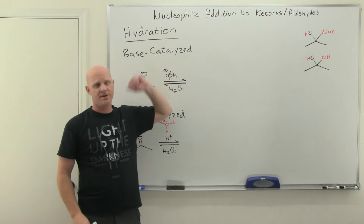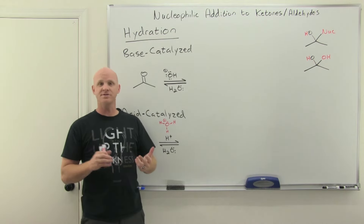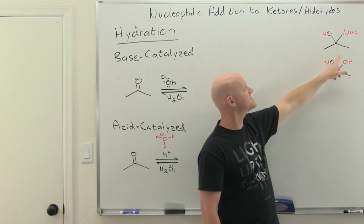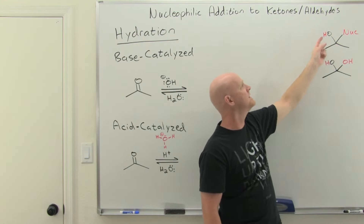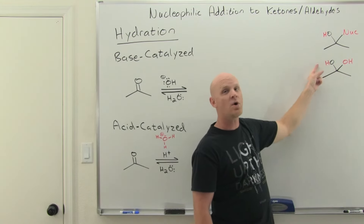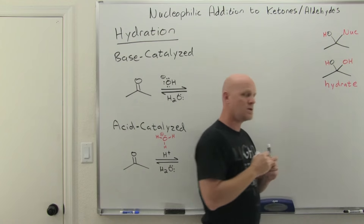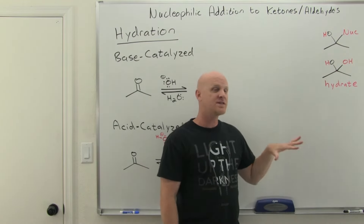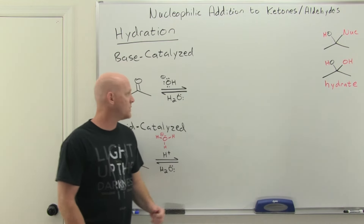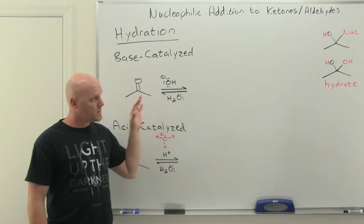The first nucleophilic addition reaction is called hydration — the addition of water across the carbon-oxygen double bond. Following the general nucleophilic addition pattern, the nucleophile (a hydroxyl group) attaches to what was the carbonyl carbon, and a hydrogen is added to the oxygen, so overall water is added across the double bond. The resulting species is called a hydrate — it looks like a geminal diol, but it behaves differently from an alcohol or diol. This reaction can be done under both base-catalyzed and acid-catalyzed conditions, and you should be familiar with the mechanism for both.